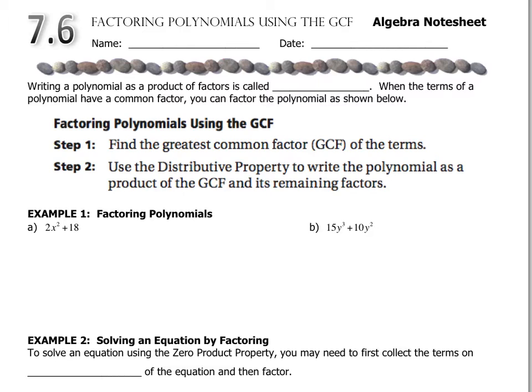Writing a polynomial as a product of factors is called factoring. When the terms of a polynomial have a common factor, you can factor the polynomial as we show below.